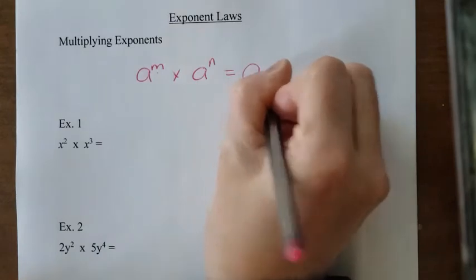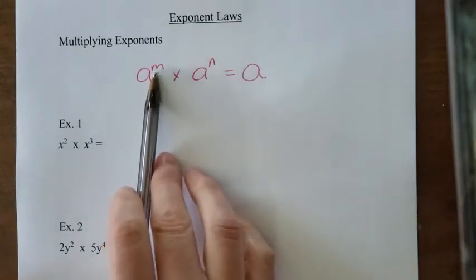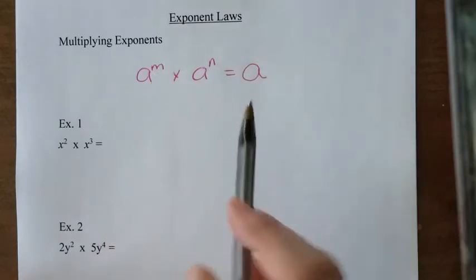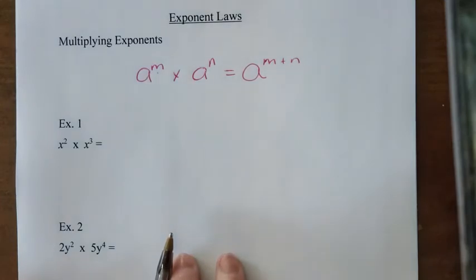You just write down the base, which is a, and then the exponents or the powers, we add them together. So m plus n. So let's try a couple examples.